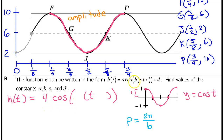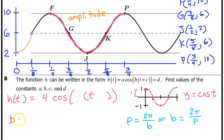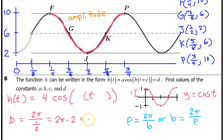Now let's find the B value. Memorize this formula: the period for both sine and cosine will always be 2π divided by the B value. Solving for B gives B = 2π divided by the period. We discovered the period was one half of a second, so B = 2π divided by one half. Dividing by a fraction means multiplying by the reciprocal: 2π times 2 equals 4π. So B equals 4π.